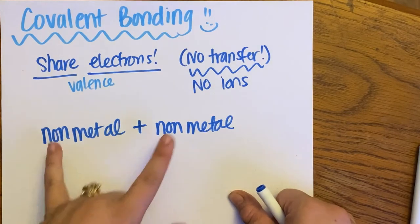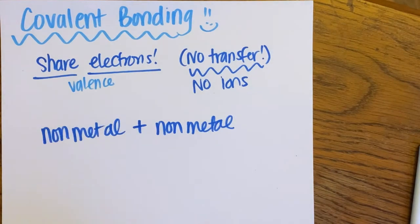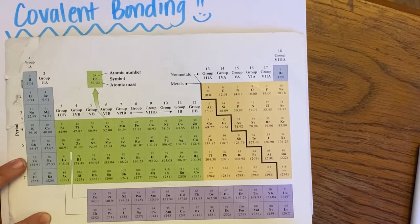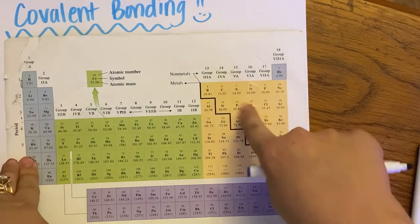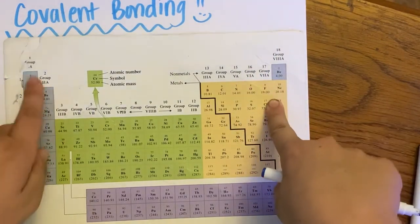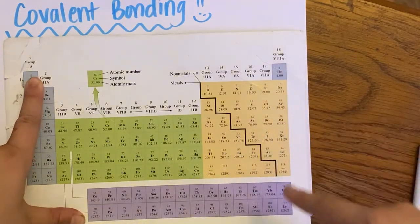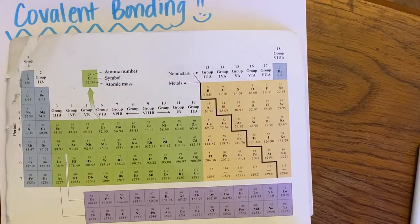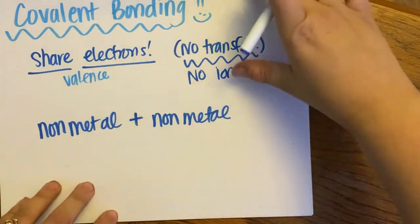So we have non-metals bonding together. If I look at my periodic table, I'm not dealing with a lot of elements with covalent bonding. My non-metals are on the right-hand side of my stair step, so I'm dealing with those guys, and also hydrogen. Not a lot of elements involved in covalent bonding, but very important.